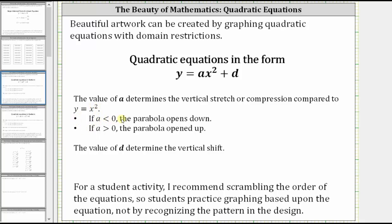If a is less than zero or negative, the parabola opens down. If a is positive or greater than zero, the parabola opens up, and the value of d determines the vertical shift.